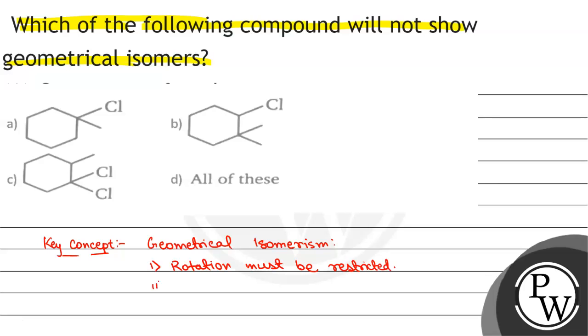Second one, group attached to carbon about which geometrical isomerism is exhibited must be different.